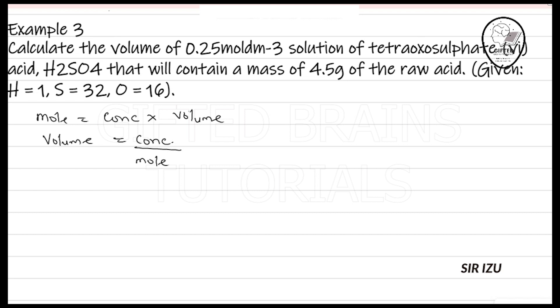But the next question comes to mind: the concentration is given to me as 0.25, but I don't have the mole. Like I said earlier, further reading the question will give you the relationship for how to get your mole. Here we are told that it's an acid, H2SO4, that will contain a mass of 4.5 grams of the raw acid. Here I am given mass, and I can relate mass and mole. Mole equals mass over molar mass.